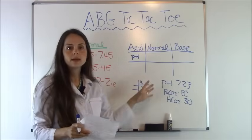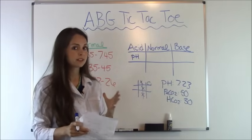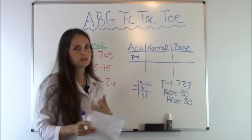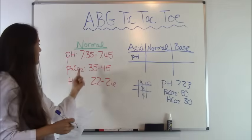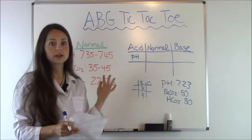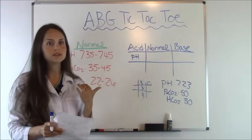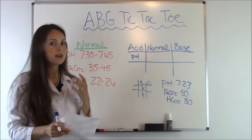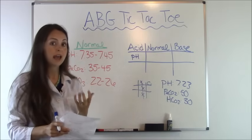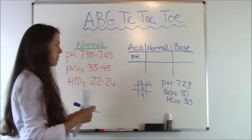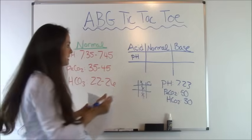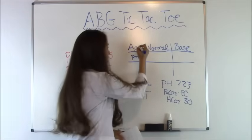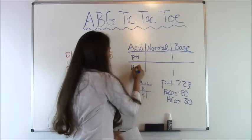Now we're going to look at PaCO2, and remember that represents respiratory. It's 50. And looking at our normal, PaCO2 normals are 35 to 45. So since it's 50, remember it's the opposite for respiratory. It is an acid, not a base. So our PaCO2 is acidic. So under that, we're going to put PaCO2.